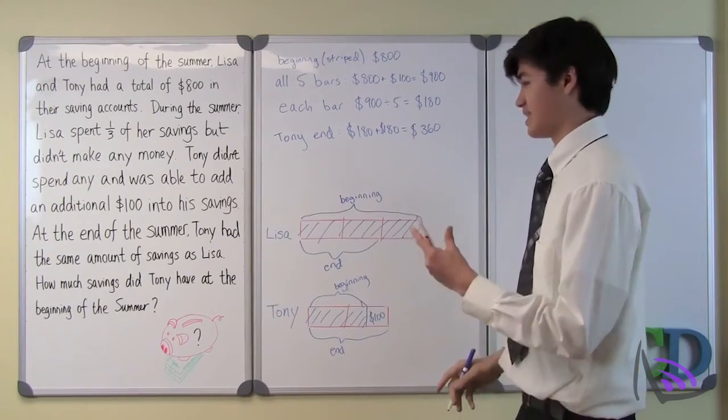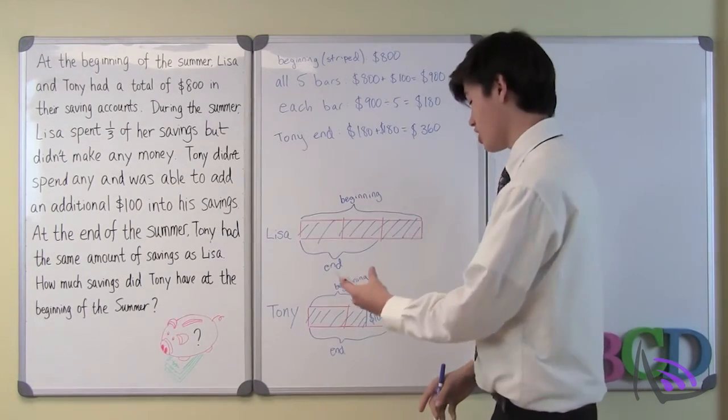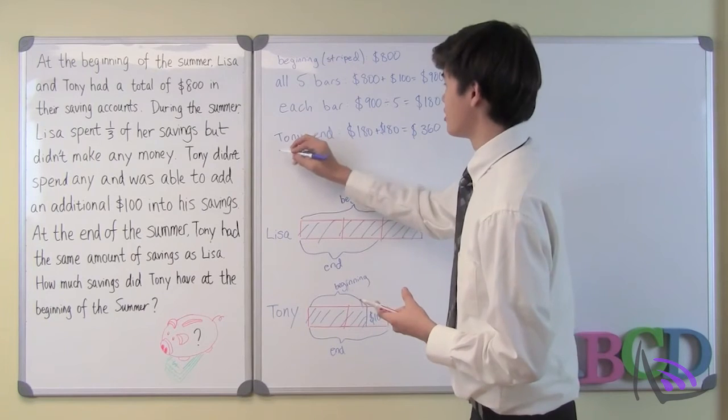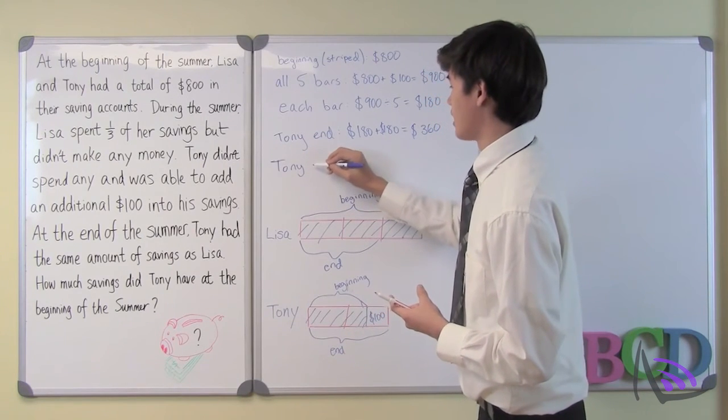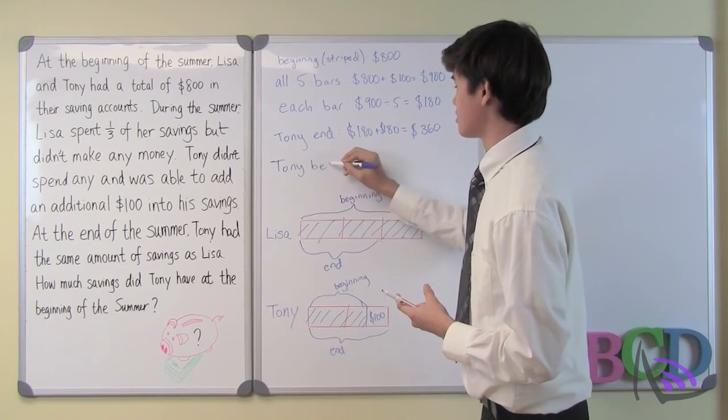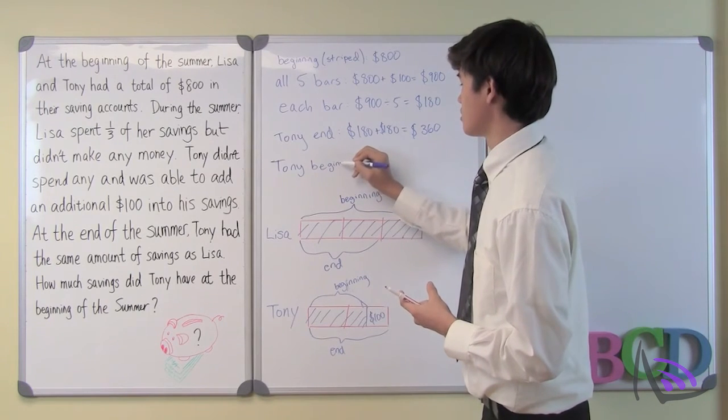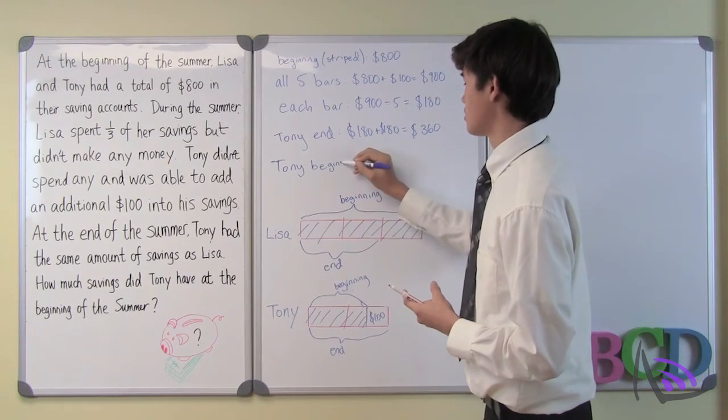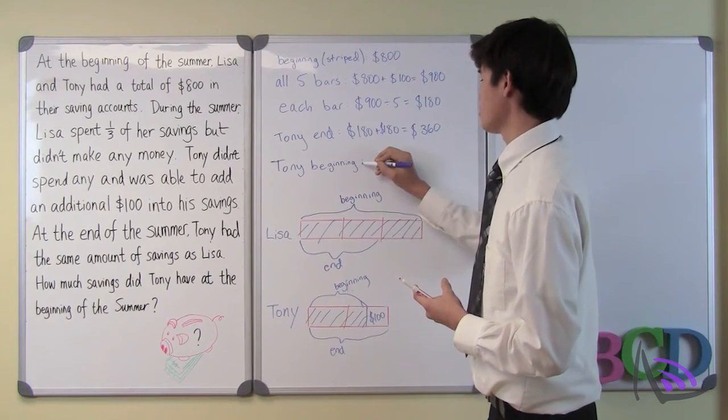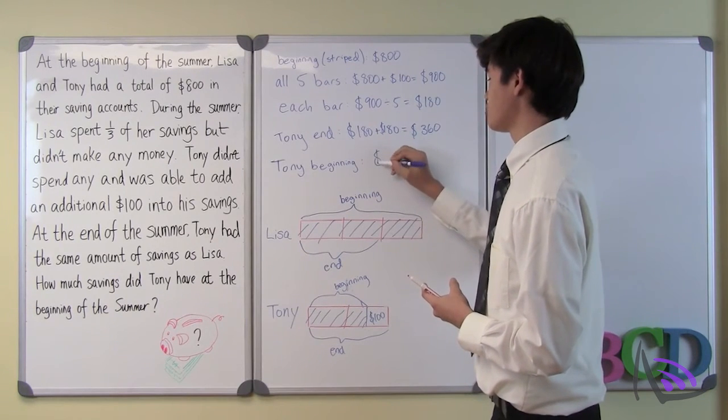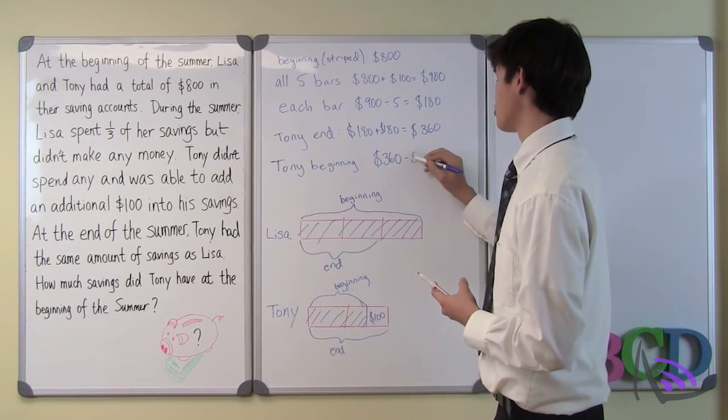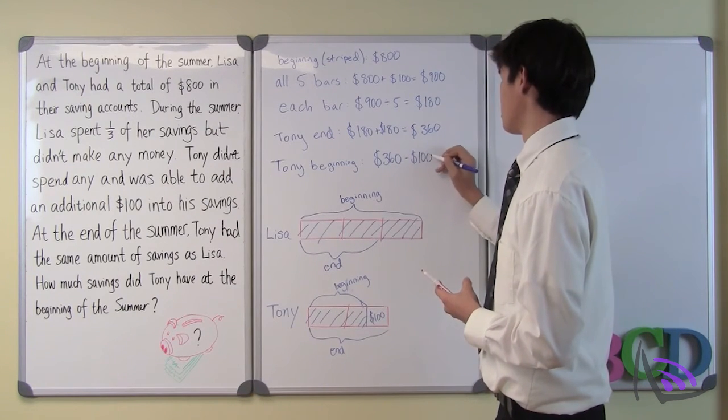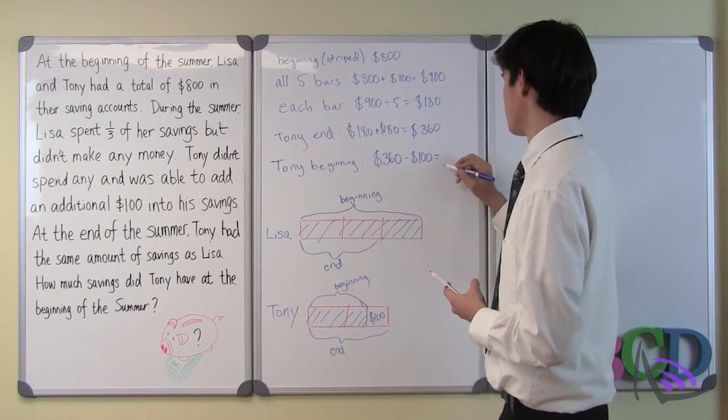And that's at the end. And the beginning is $100 less than at the end. So Tony at the beginning of the summer would be $360 minus $100, which is equal to $260.